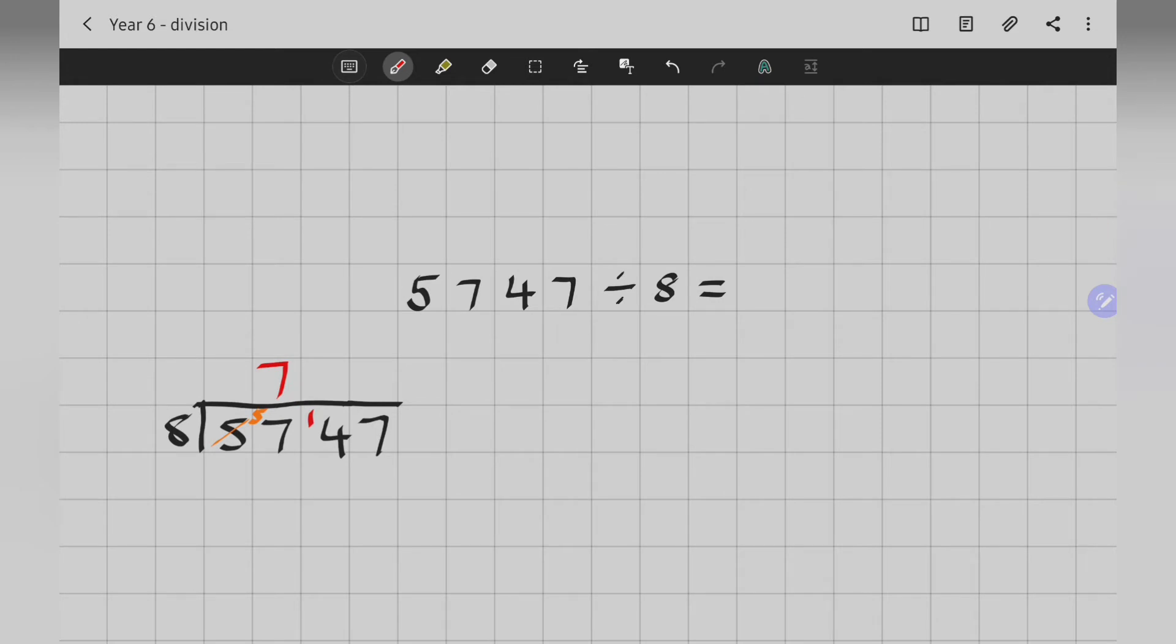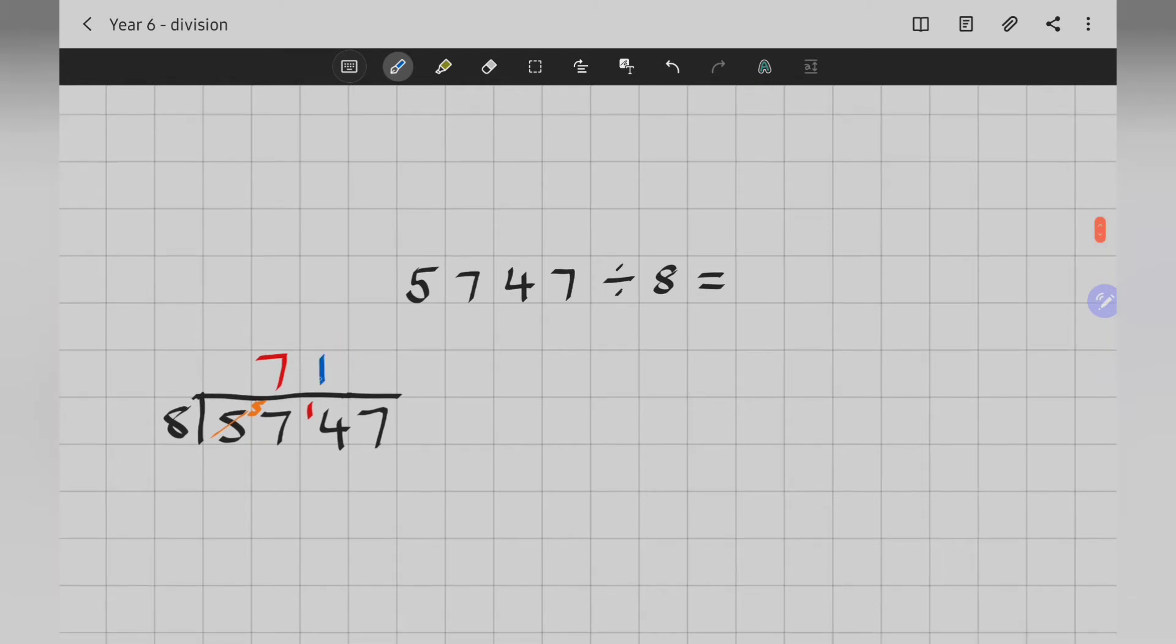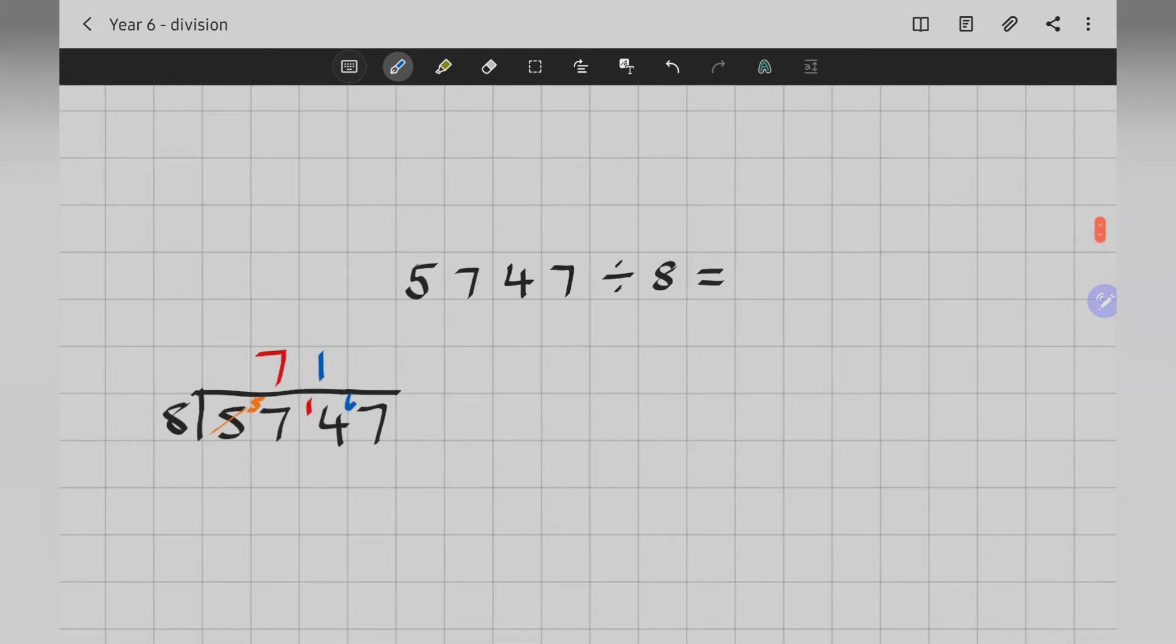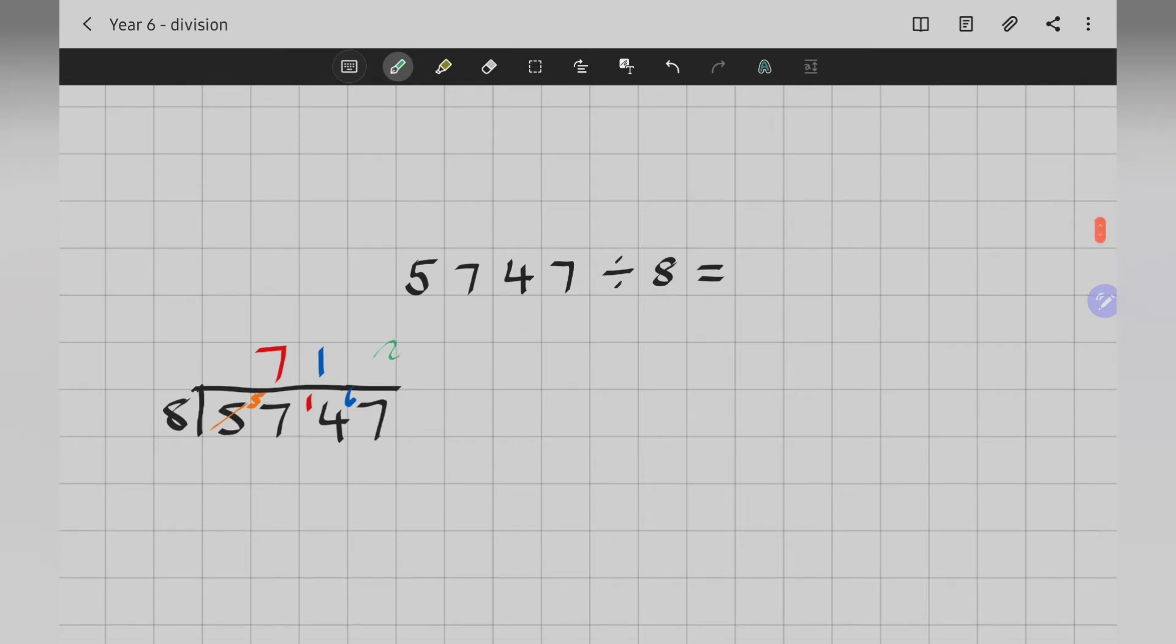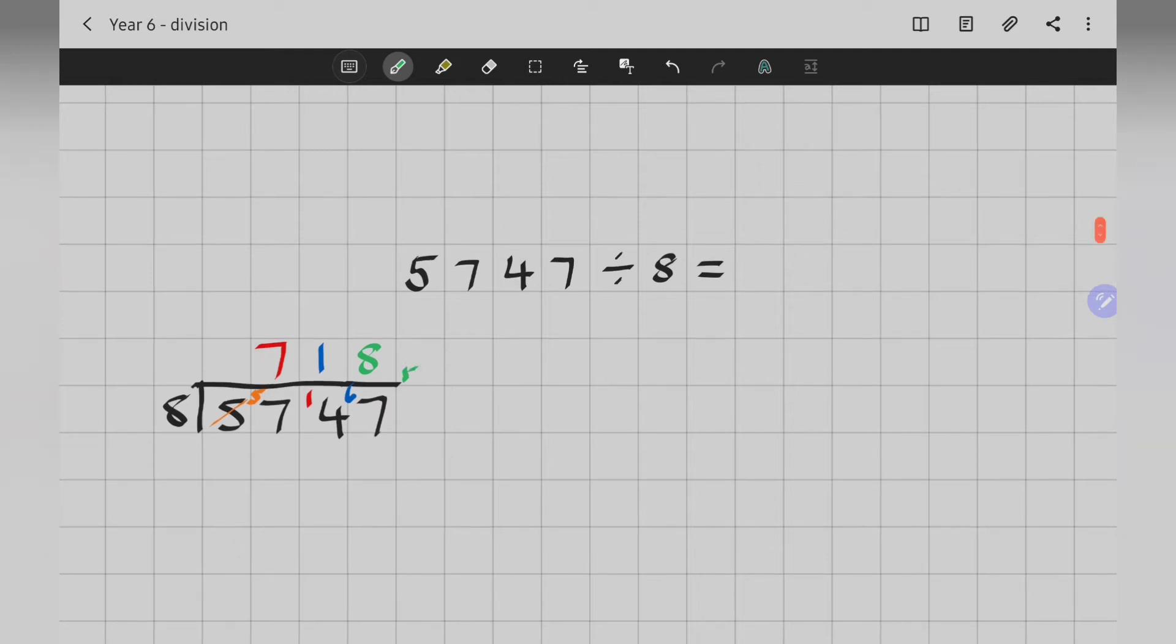8 into 14. Can I do that one? Well, that'll go once with 6 left over. And then 8 into 67. Well, 8 times 8 is 64. So, that's an 8. But I've got some left over. I've got remainder. So, I've got remainder of 3.